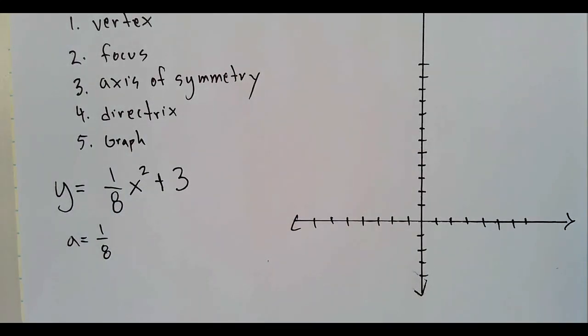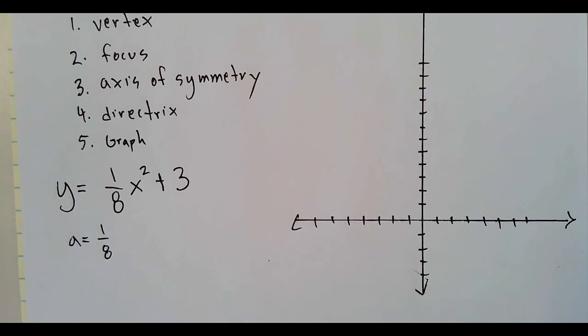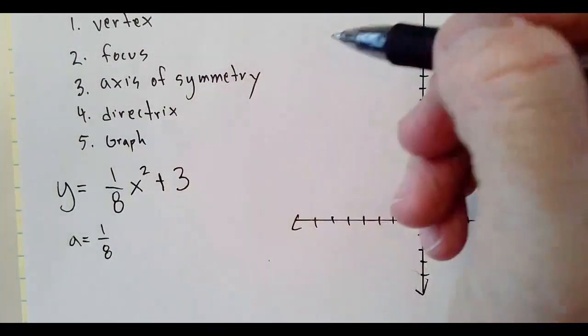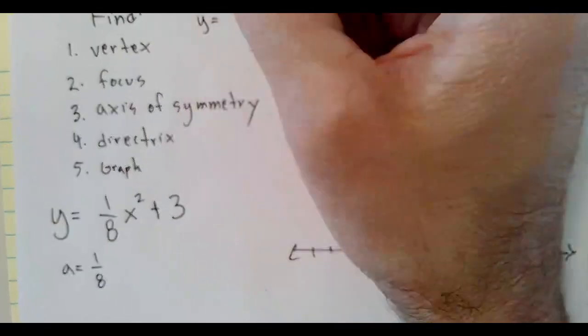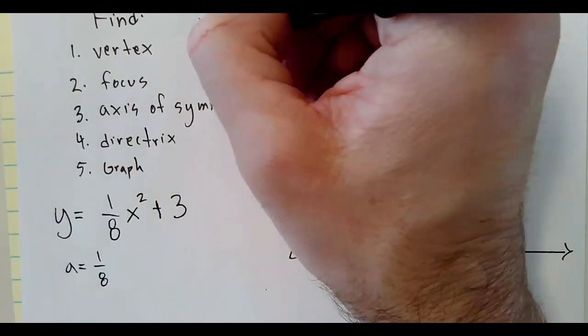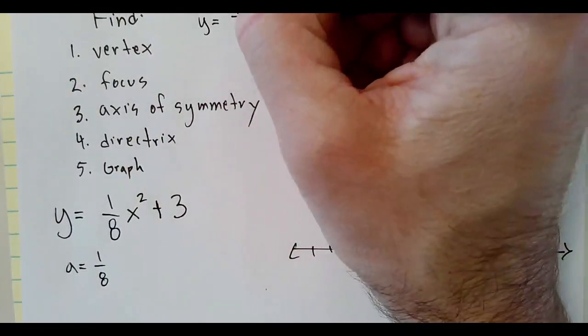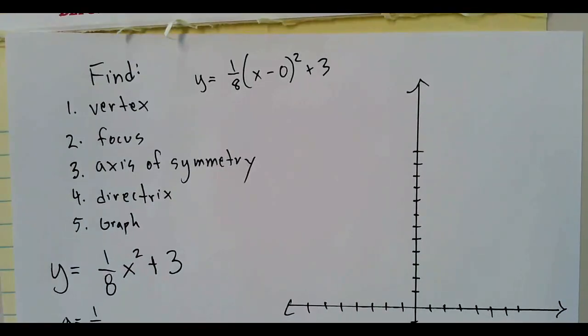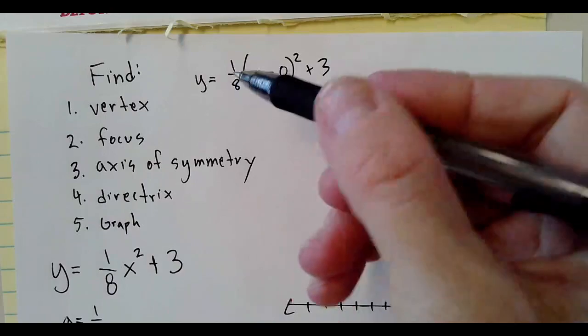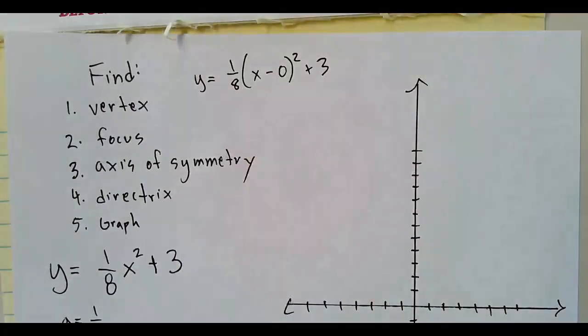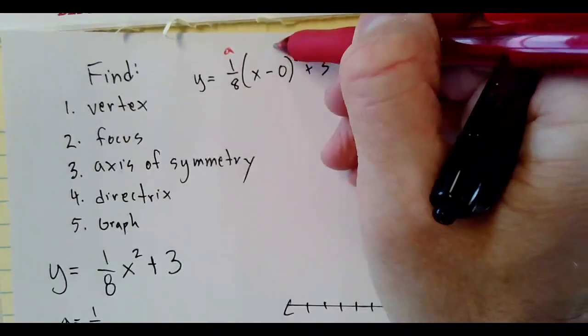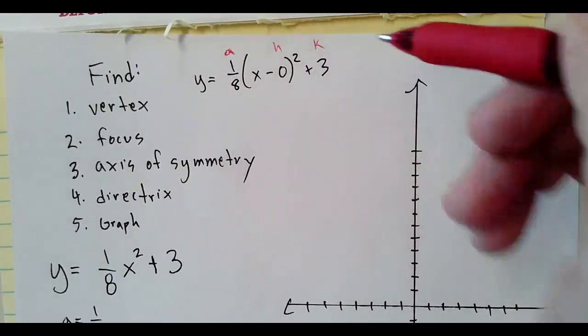If we wanted to write this in the regular a times (x minus h) squared plus k form, we would write it like y equals one-eighth times (x minus zero) squared plus three. We can easily see that this is the a, this is the h, and then this is the k right there.